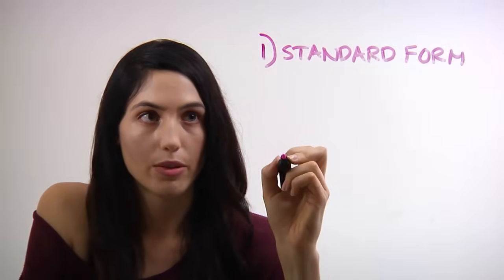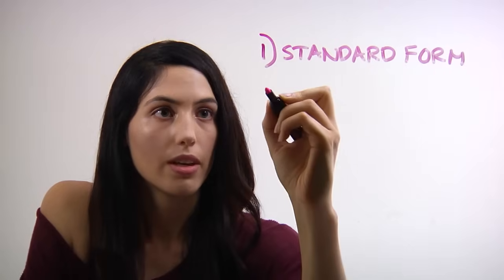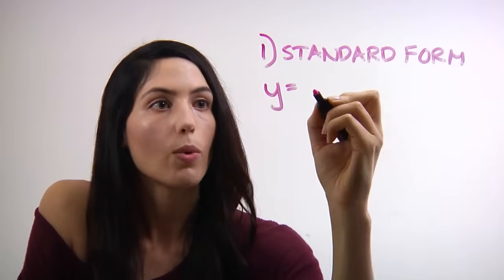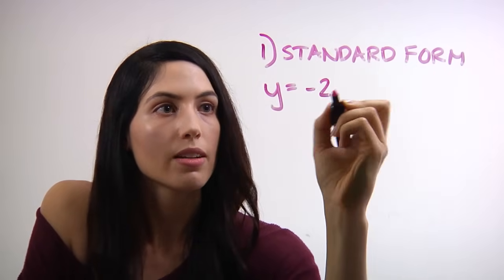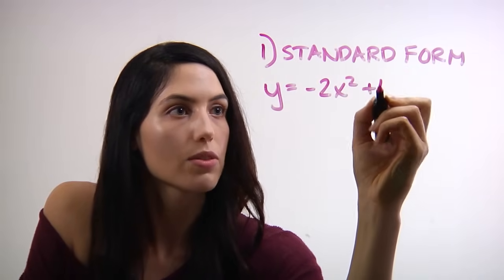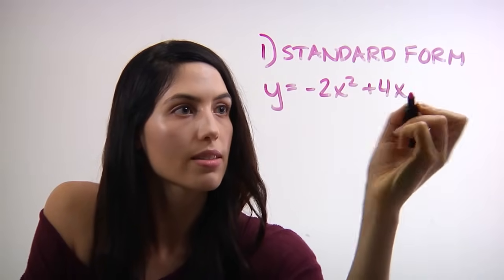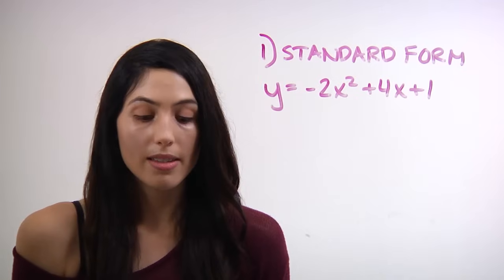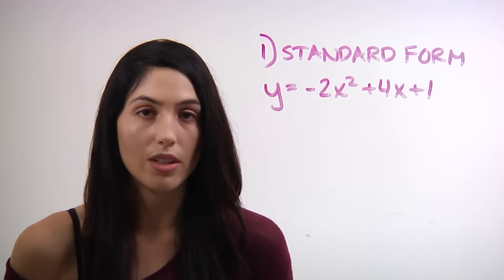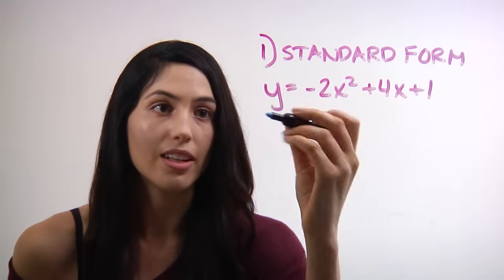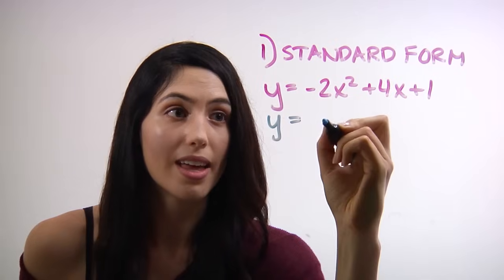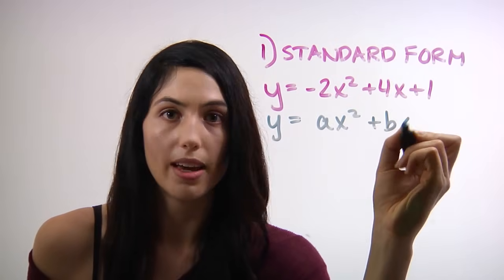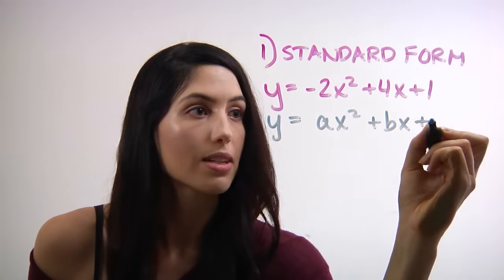Say that you've been given the standard form of the equation of a parabola, such as y equals negative 2x squared plus 4x plus 1. That is the standard form, which in general looks like y equals ax squared plus bx plus c.